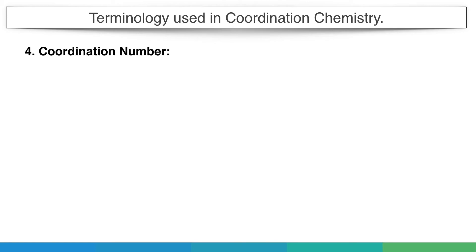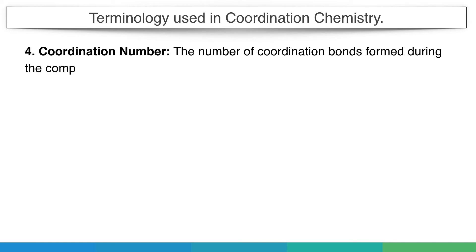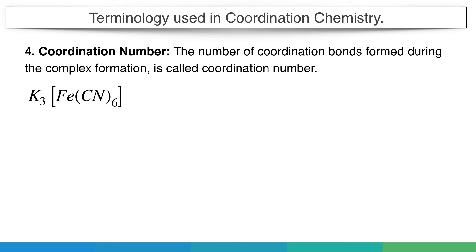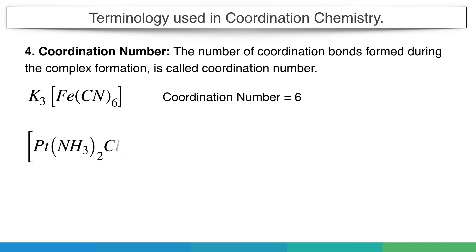Next comes coordination number — it is the number of coordination bonds formed during complex formation. For example, in potassium ferrocyanide, potassium is bonded by an ionic bond, so we only consider groups inside the square bracket. Inside the square bracket, iron is bonded to six cyanide groups making six coordinate bonds, so the coordination number is six. In another complex, if ammonia and chloride are both inside the square bracket, with two bonds each, the coordination number is four.